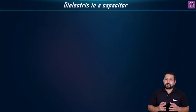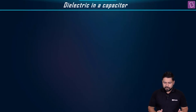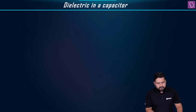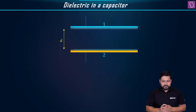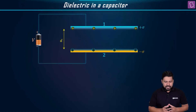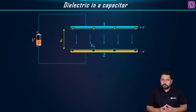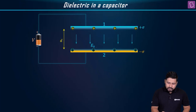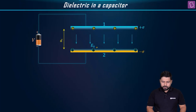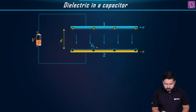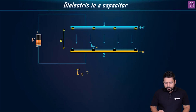What happens when we introduce a dielectric between the two plates of a capacitor? Let us say we have two plates with distance d between them. We have a battery and we charge it. There will be an electric field E₀ in between the two plates. The value of E₀ will be equal to σ/ε₀, where σ is the charge density.